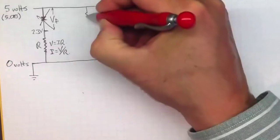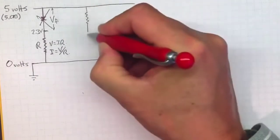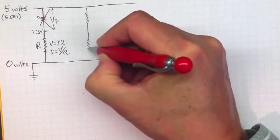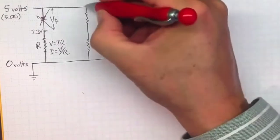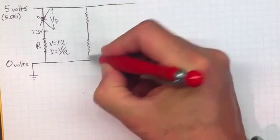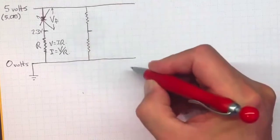If we have a resistance, and another resistance, then this will be 5 volts, that will be 0 volts, and this will be some in-between voltage.